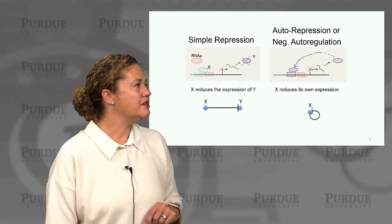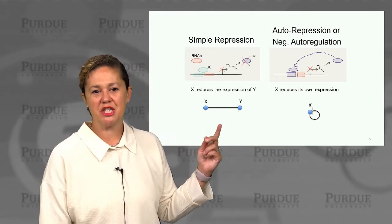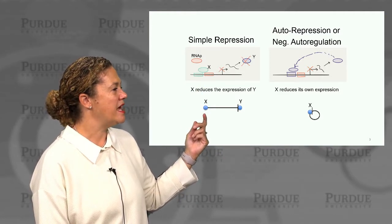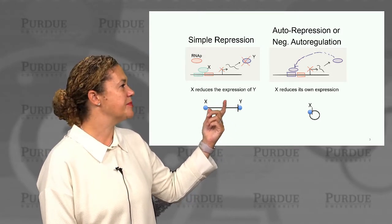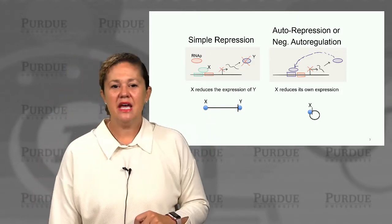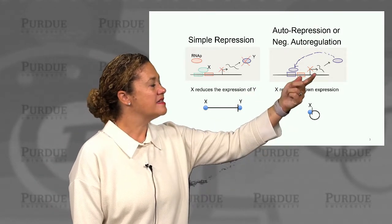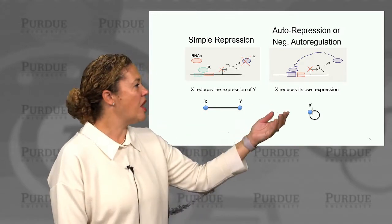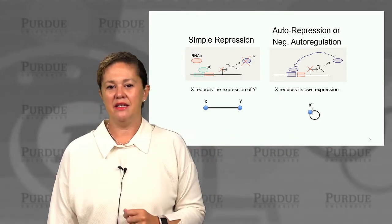So what is negative auto regulation? Let's start with reminding ourselves of simple repression. In simple repression, we have a repressor such as protein X that blocks or inhibits and reduces the probability of expression of protein Y. So our network view would look like this. Negative auto regulation is when a gene product of X comes back and negatively inhibits its own expression. Our network view would look like this, with this circle coming back around and inhibiting.